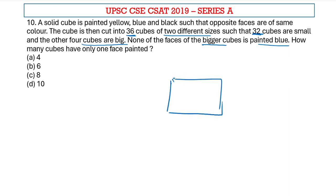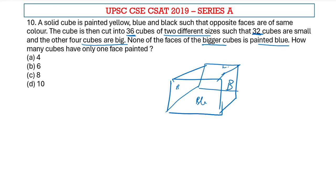It's easy to identify that none of the bigger cubes are in any of the corners, because if we take the corners — for example, if blue is on one face and opposite is also blue, black on this face and the opposite back portion as black, and top and bottom as yellow — if any corner is taken as the big portion, blue is going to be there. They have explicitly said the bigger cubes are not painted blue. Therefore, none of the corner pieces can be the big piece, so we can say that only the center pieces are going to be the bigger pieces.